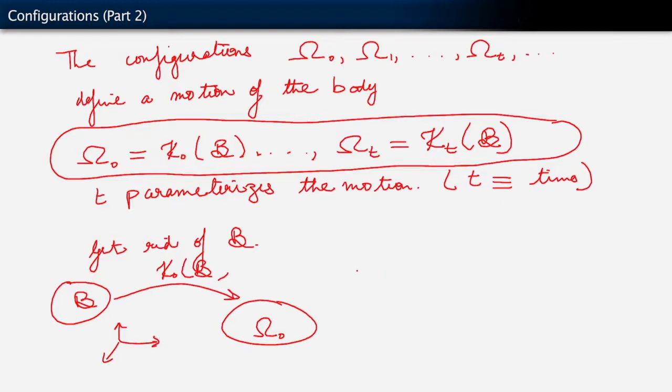Now, what we are going to say is that the map kappa naught is essentially one to one and onto. So, what this implies is that kappa naught is invertible.